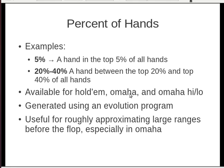Percent of hands is available for Hold'em, Omaha, and Omaha High-Low. Five percent means a hand in the top five percent of all hands, and you can also use ranges — so 20% to 40% is a hand between the top 20 and 40 percent. You can check out how these rankings were created on the blog. These are useful for getting a rough estimate of a big range, usually pre-flop, especially in a game like Omaha where there are just so many hands and it's often impractical to list them all. And that's it for part one — I'll see you in part two.